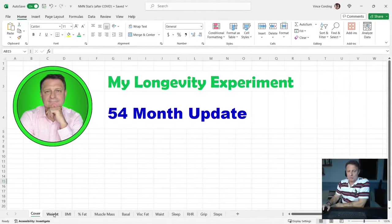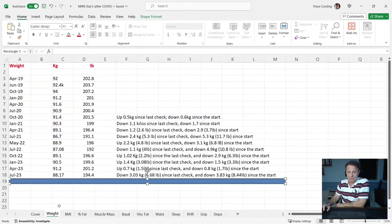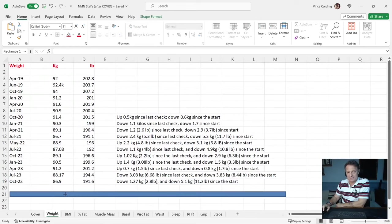Moving on, let's look at my more objective stats for my 54 month update. First, weight. Last three months ago it was 88.17 kilograms, 194.4 pounds. I'm now down to 86.9, so I've lost 1.27 kilograms, that's around 2.8 pounds since last time. And that's down 5.1 kilograms, 11.2 pounds since the start.